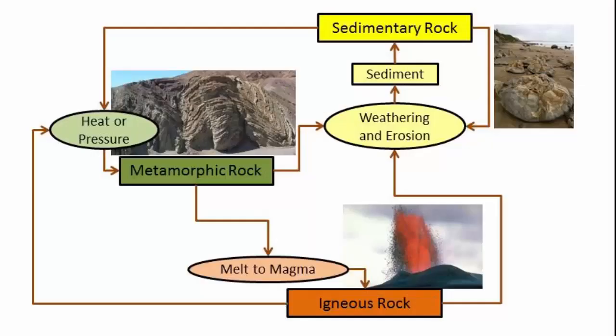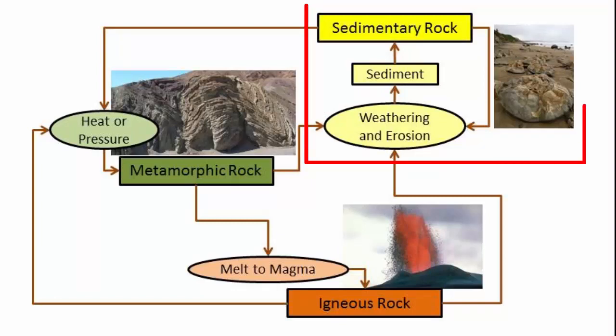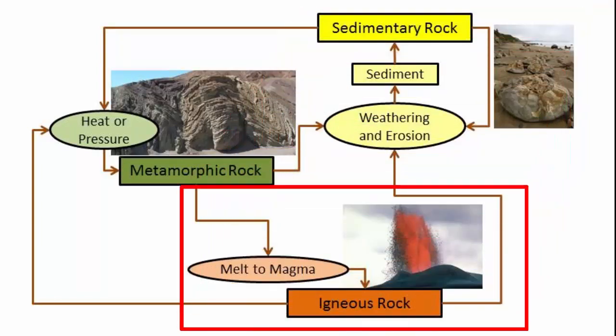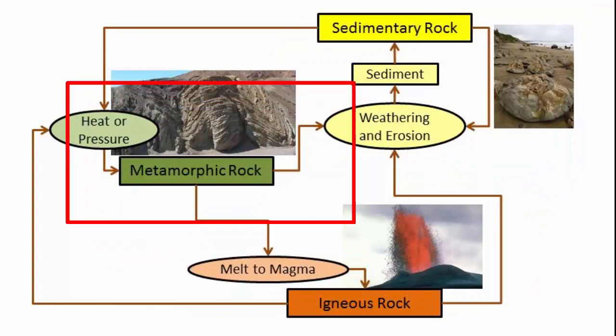All rocks on Earth's surface can be classified as one of three kinds: sedimentary, igneous, or metamorphic.